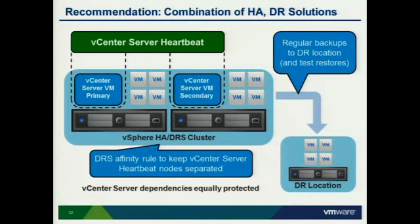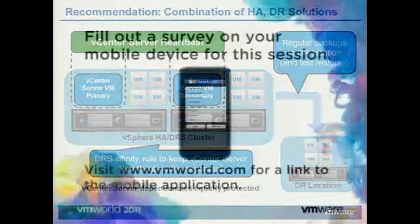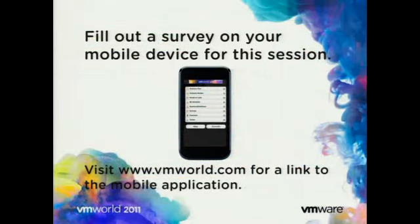The recommended approach right now for the vCenter appliance is vSphere HA. The appliance is virtual and uses two CPUs, so FT is not an option at that point. Regarding multi-CPU FT support in vSphere 5: we had a live demo but it's not currently supported in vSphere 5. We're working on it.